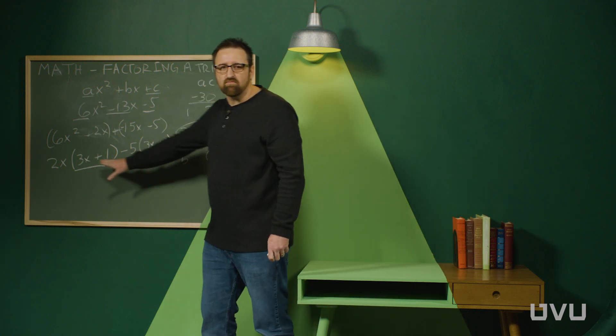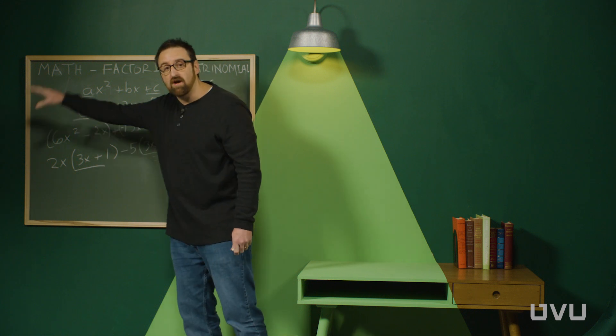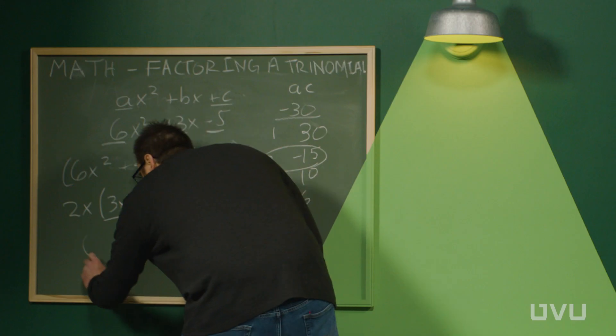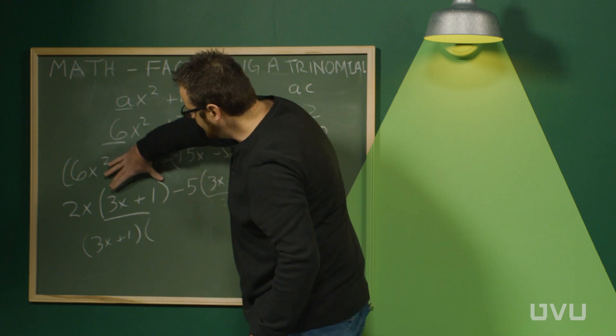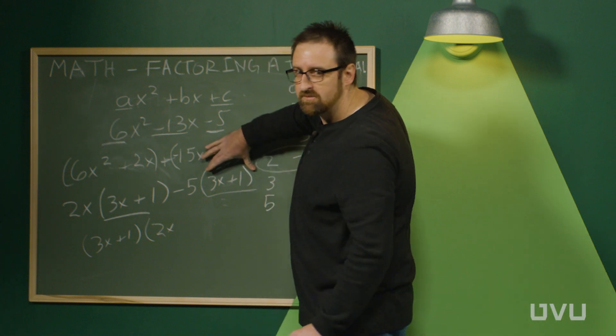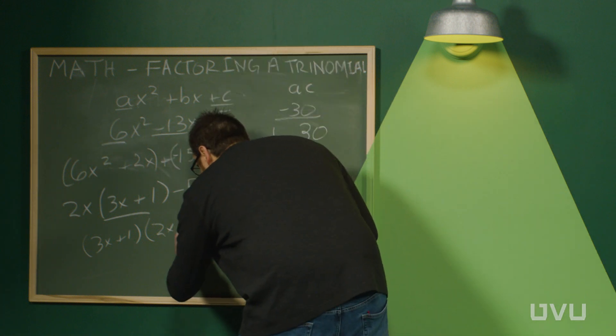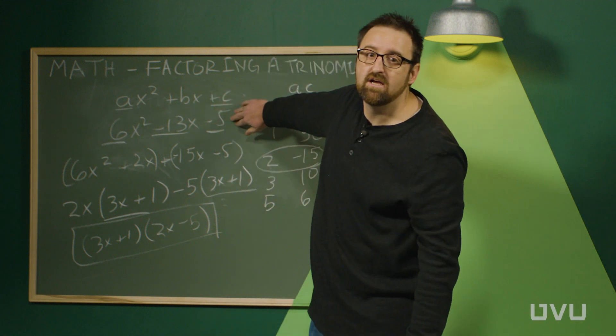Once you see that you have the same parentheses here, those things in parentheses can factor out from the whole thing. And you end up with 3x plus 1 times, well if you take 3x plus 1 out of this one, you get 2x. And if you take 3x plus 1 from that one, you get minus 5, which is the factored form of this trinomial.